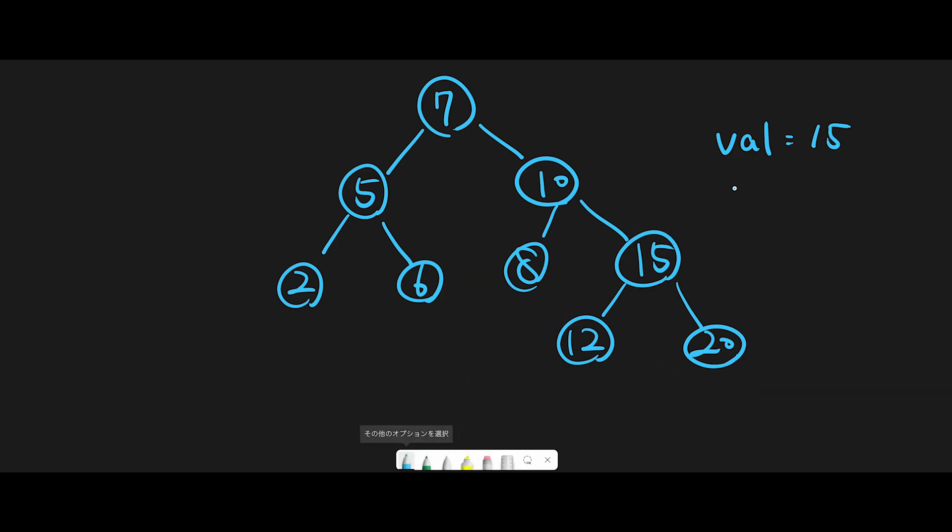So we have to find 15, right? Start from the root node. If you know binary search tree, you already know which way we should go. We have two choices: go to left side or go to right side. And 15 is greater than 7, so that's why we go to the right side.